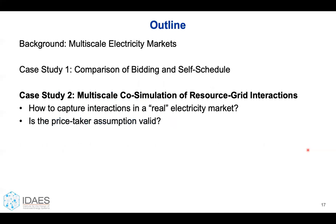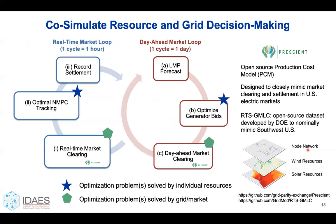Next, we want to understand how to capture the interactions between resources and the grid in a real market. We propose a more complicated workflow with two loops — one for the day-ahead market and one for the real-time market. Stars represent optimization problems solved by the resource; pentagons represent optimization problems solved by the grid. We use Prescient, an open-source production cost model that was carefully designed to closely mimic real energy markets in the U.S.